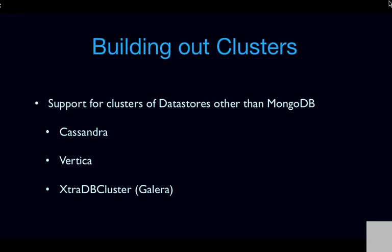We're also building out the clustering support we added in Juno. We have the clustering API with MongoDB support, but there are folks interested in adding clustering for other data stores. People are working through the design of adding Cassandra clusters and Vertica clusters to Trove, and lots of folks are interested in adding Galera support for clustering through ExtraDB cluster as well.